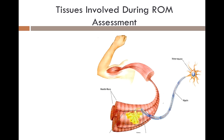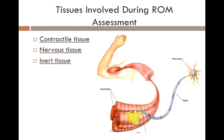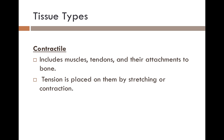The tissues involved during range of motion assessment are contractile tissue, nervous tissue, and inert tissue. Contractile tissue includes muscles, tendons, and their attachments to bone. Tension is placed on these tissues by stretching or contraction.